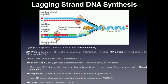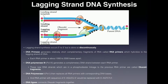We have an enzyme called DNA primase. DNA primase generates relatively short complementary fragments of RNA called RNA primers. These green things in the picture on the lagging strand are the RNA primers. These RNA primers are complementary to parts of the DNA, and they hybridize to the lagging strand. Each of these RNA primers is about 1,000 to 2,000 bases apart.